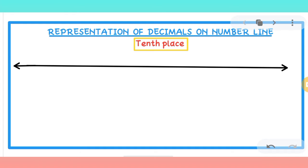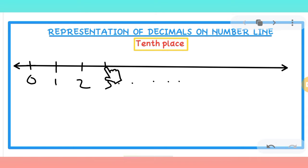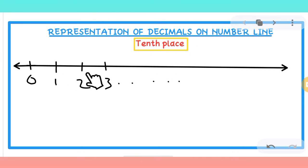On a number line we have numbers like 0, 1, 2, 3, and so on — this is what we have learned in previous classes. Now for decimals, we will go further deep into it. Decimal places come in between any two whole numbers. The tenths place that we will represent comes in between any two numbers.